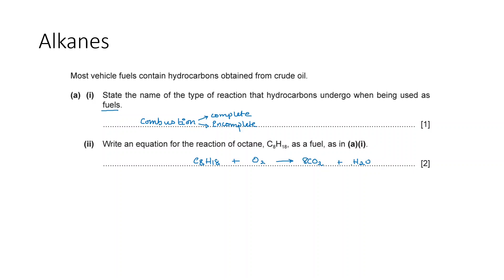Balancing complete combustion of octane: C₈H₁₈ + 12.5 O₂ → 8 CO₂ + 9 H₂O. For incomplete combustion, instead of CO₂ you get CO (carbon monoxide), and water vapor is also produced. The balanced equation gives 8 CO + 9 H₂O with 8.5 moles of O₂ — less oxygen than the 12.5 moles needed for complete combustion.